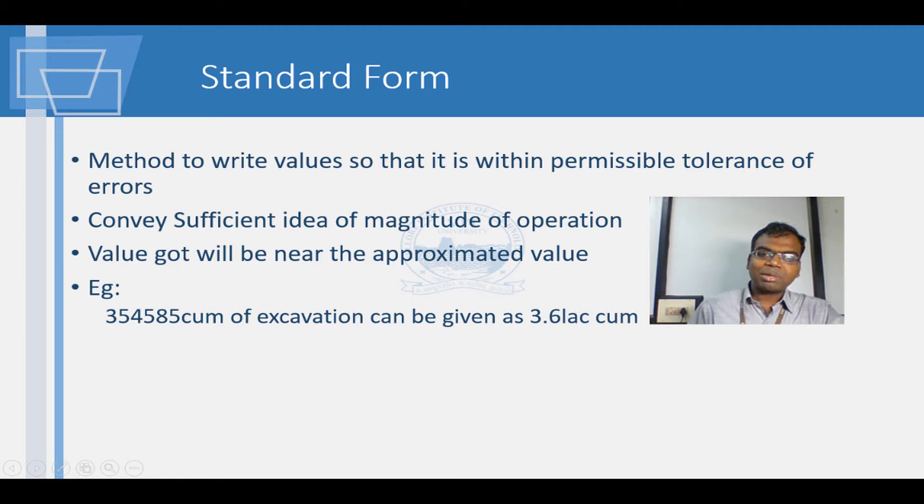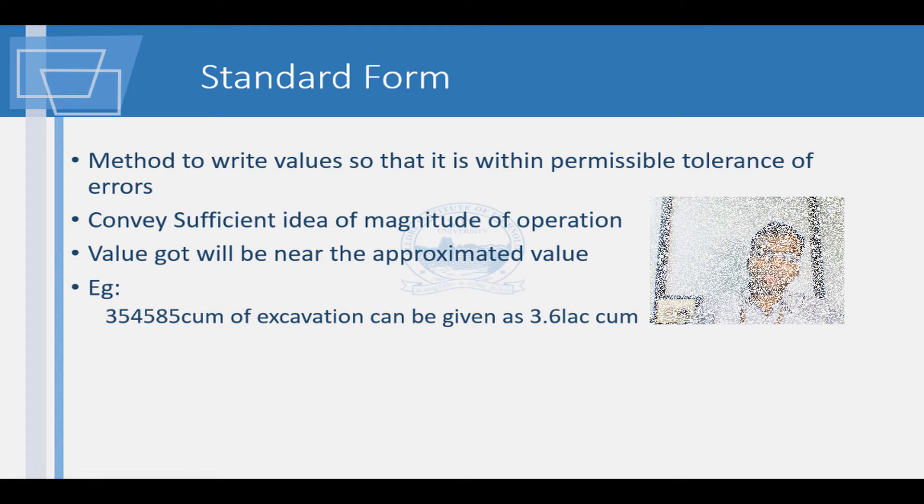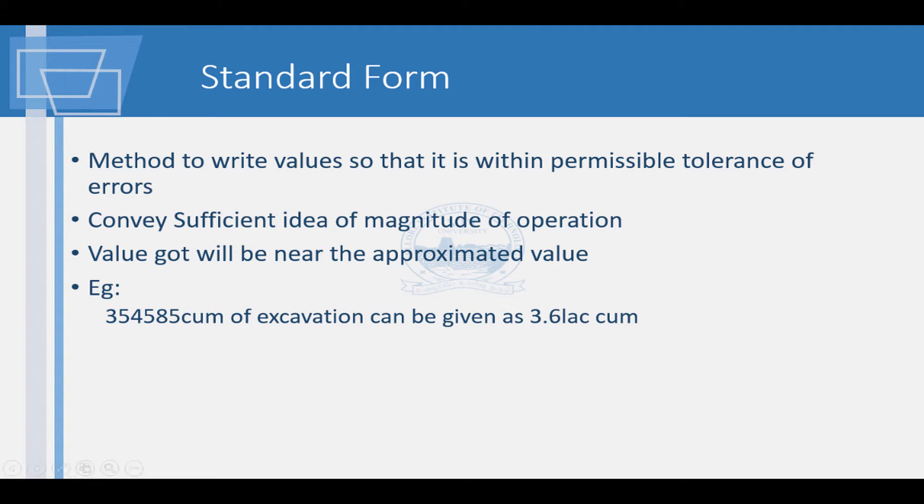Earthwork is relatively cheap work and is prone to large variation. Rounding 3,054,585 to 3.6 lakh cubic meters may not be a big deal. However, according to the rules of rounding, it will be 3.5 lakh cubic meters only. Another example is the Young's modulus of steel written to standard form.